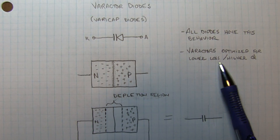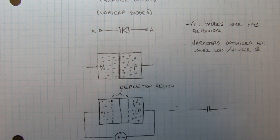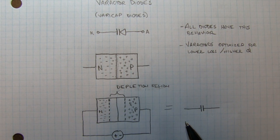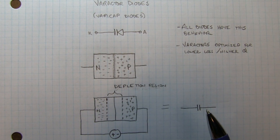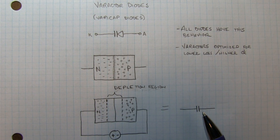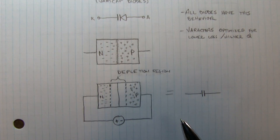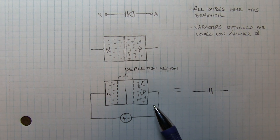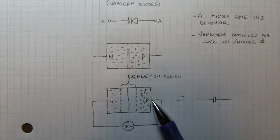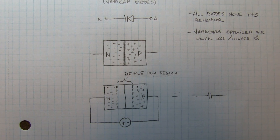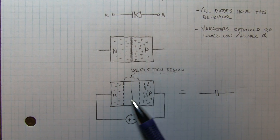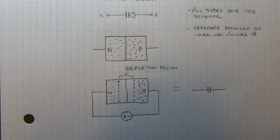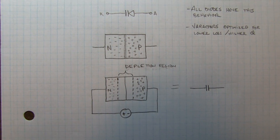All diodes will work as varactors. In fact, you might find people using a 1N4004 rectifier diode in a varactor application, or even LEDs - they'll all exhibit this behavior. So let's go make some measurements on one to see how this works.